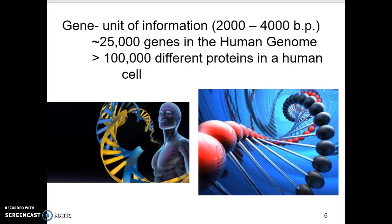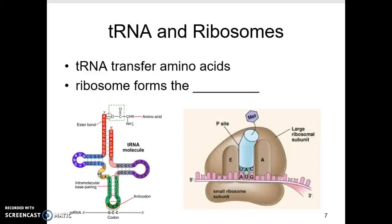We have approximately 100,000-plus proteins associated with our cells, and those proteins are all made from the genes contained in our DNA. As we take our DNA, turn it into RNA, and turn it into proteins, certain structures are key. One is tRNA — transfer RNA. It looks like a lowercase letter T, and the bottom has a hook that holds a particular amino acid to it.